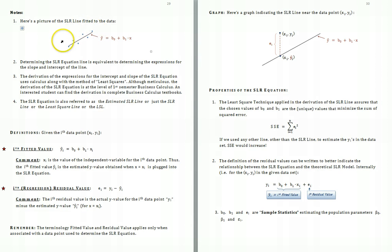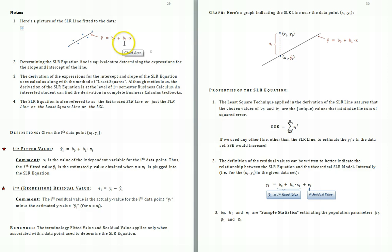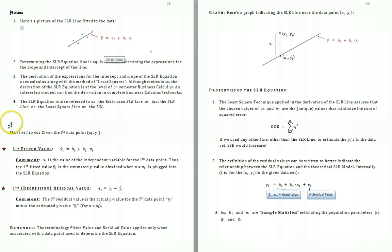Here's the scatter plot from the previous page, where the Simple Linear Regression line has been superimposed, along with the equation of the line where we first obtained the slope and then the intercept. The Simple Linear Regression line can also be referred to as the estimated Simple Linear Regression line, the Least Squares line, or just the LSL.